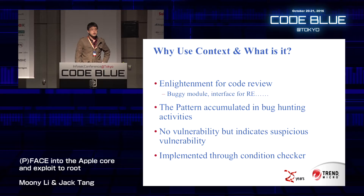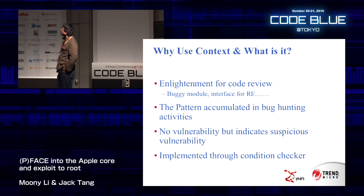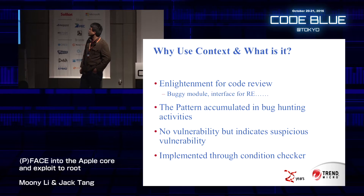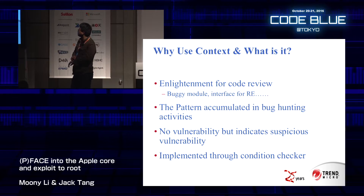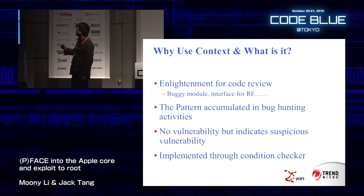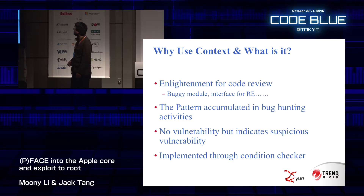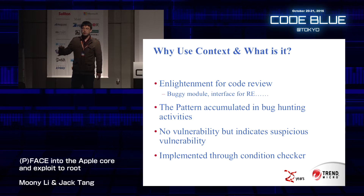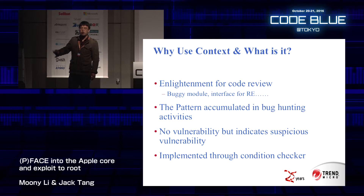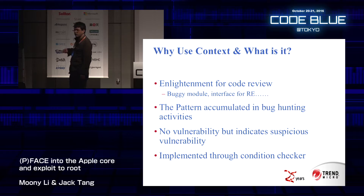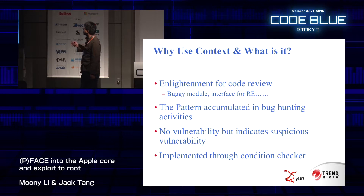Another point is about context, as I mentioned before. What is context and why do we introduce it? The context means the pattern accumulated during our fuzzing activities, and it could give much more enlightenment to the researcher for code reviewing. For example, it could tell the researcher which module is more buggy than others and which interfaces or APIs are more important or more vulnerable. So context is not a vulnerability itself, but it can indicate suspicious vulnerabilities.